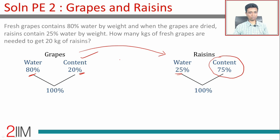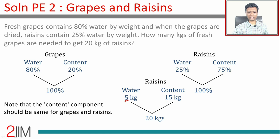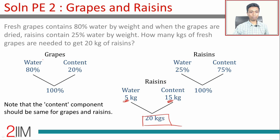We're changing the mixture by removing or reducing the water content. The key is: the content part does not change. Water is removed; content stays the same. Now, 20 kilograms of raisins contains 5 kilograms of water and 15 kilograms of content. Once you've captured all the data, you're practically done with this question.